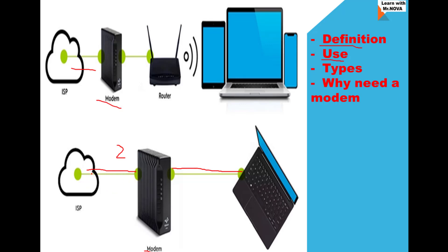It can equally demodulate — that is, it converts the digital signals from the computer back into analog signals and sends them to the analog telephone line, back to the ISP. That is why there can be two-way communication.